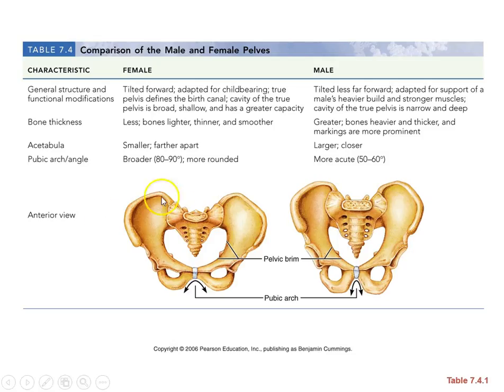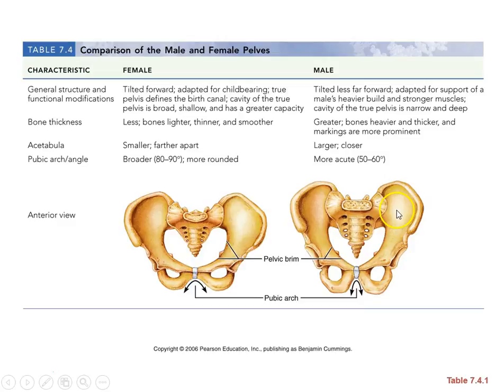Here's a comparison of female and male pelvises: females have a much wider arch, while males are much smaller — females have a larger pelvic area to fit offspring through.